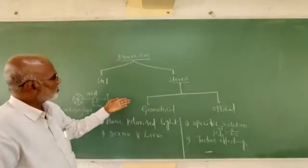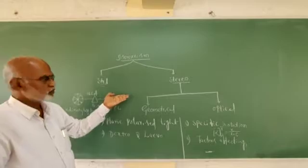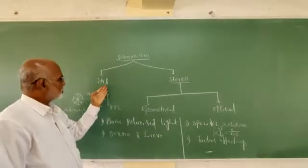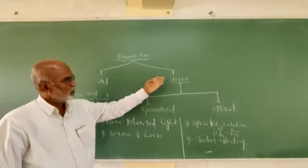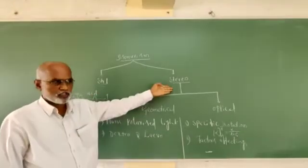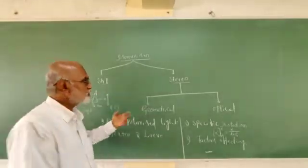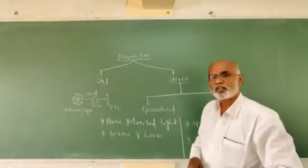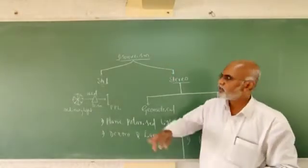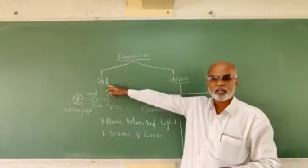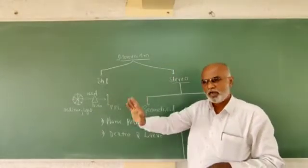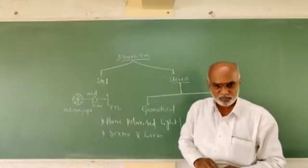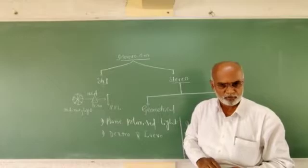Isomerism is broadly classified into two types: structural isomerism and stereoisomerism. Compounds with the same molecular formula but differing in structure are called structural isomers, and the phenomenon is called structural isomerism.